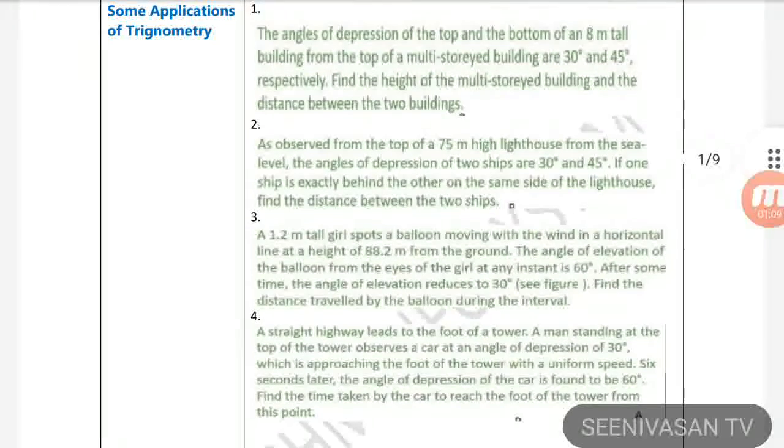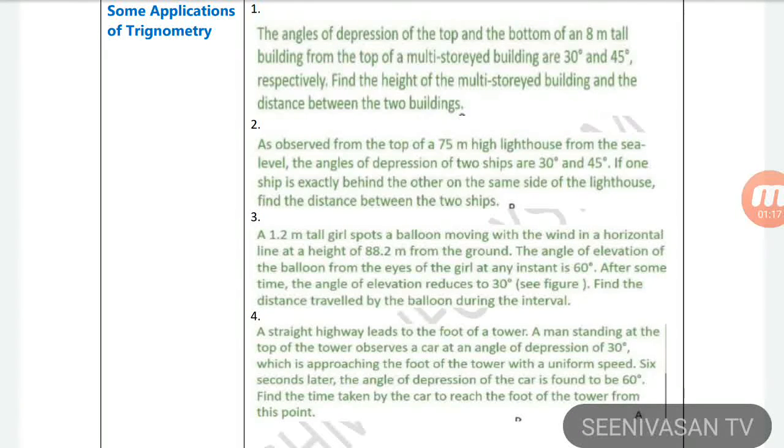You can check it out. If you don't see the question in the channel, we will see the answer. A 1.2 meter tall girl spots a balloon moving with the wind in a horizontal line at a height of 88.2 meters from the ground. The angle of elevation of the balloon from the eyes of the girl at any instant is 60 degrees. After some time the angle of elevation reduces to 30 degrees. Find the distance traveled by the balloon during the interval.